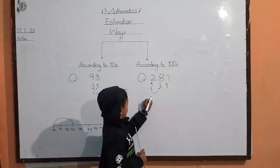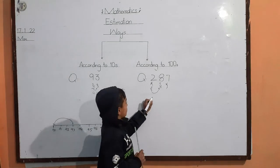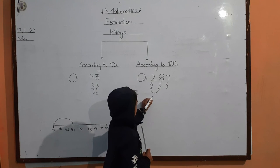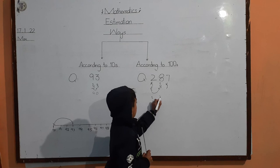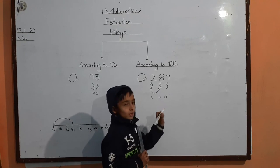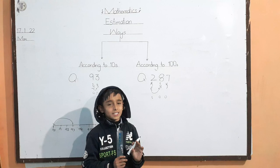Sixth step, answer right karna. Nine. Yahaan three ajaega. Yahaan donoh ki jaga zero ajaega.